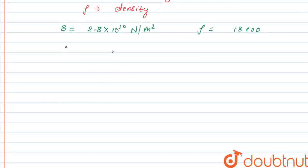So the velocity of sound V is equal to root under B upon rho. So B is the modulus of elasticity and rho is the density.